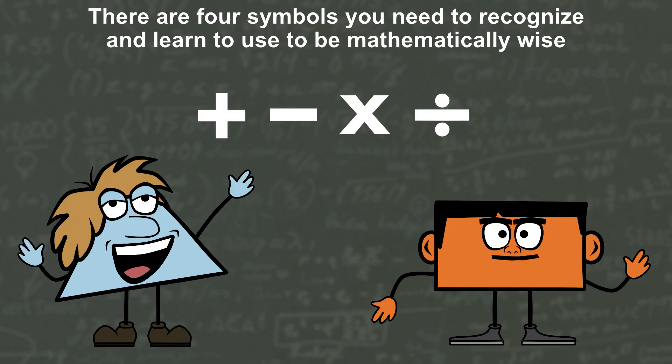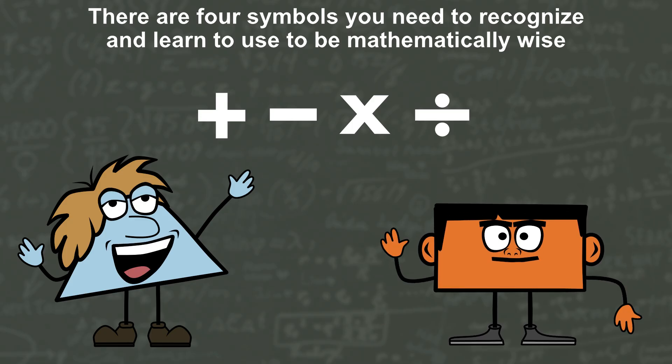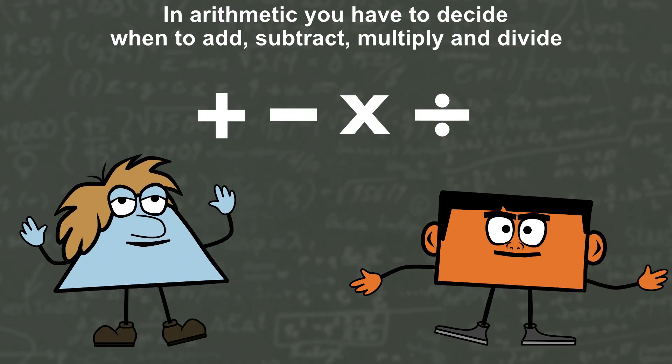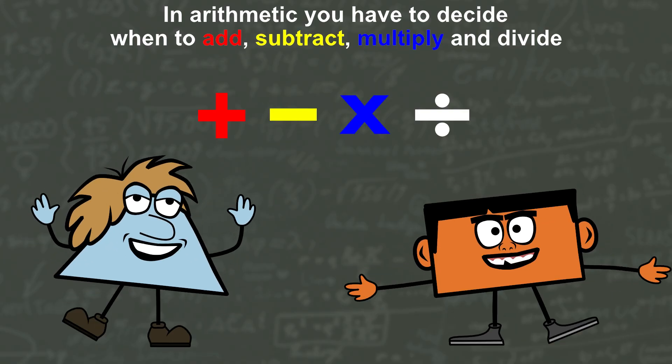There are four symbols you need to recognize and learn to use to be mathematically wise. In arithmetic you have to decide when to add, subtract, multiply and divide.